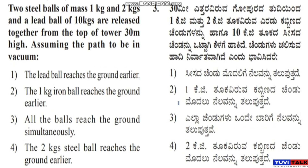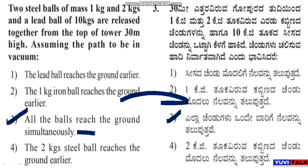Option 4: the 2 kg steel ball reaches the ground earlier. The right answer is option 3: all the balls reach the ground simultaneously. This is correct because in a vacuum, all objects fall with the same acceleration regardless of mass.